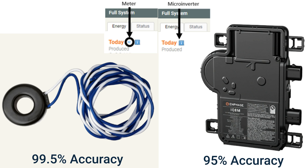Another great tip to verify if we are capturing total production is to open two separate browser windows for the same system. Adjust one of the views to microinverter measurements and the other view to meter measurements. Now you can simply toggle between the two browser windows to compare data.